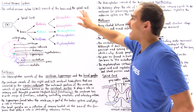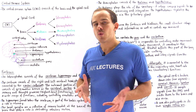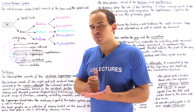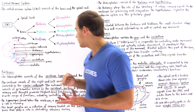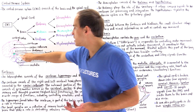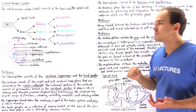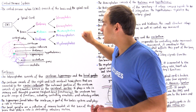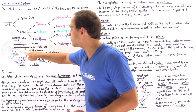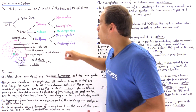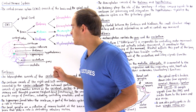The telencephalon contains three important structures: the cerebrum, which is this entire structure here, the hippocampus, and the basal ganglia. The diencephalon contains the thalamus and the hypothalamus.